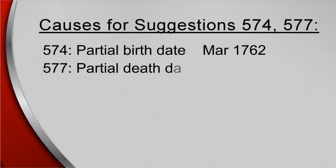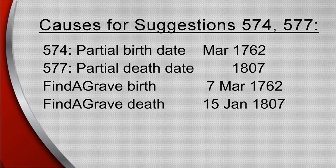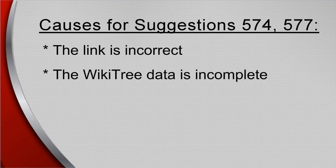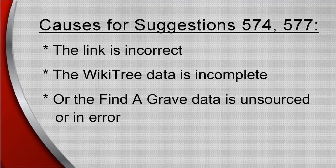Suggestions 574 and 577 are caused when there is a partial date of birth or of death in the WikiTree profile, but the Find a Grave Memorial has the full day, month, and year. This is caused if the link is incorrect, which either needs to be corrected or removed, or if the WikiTree data is incomplete.